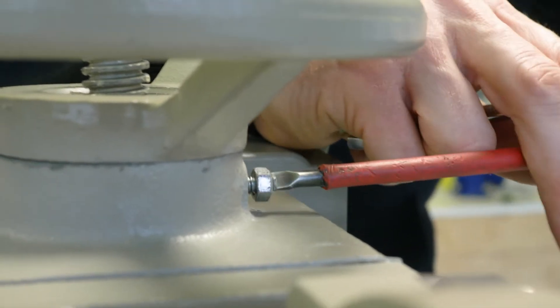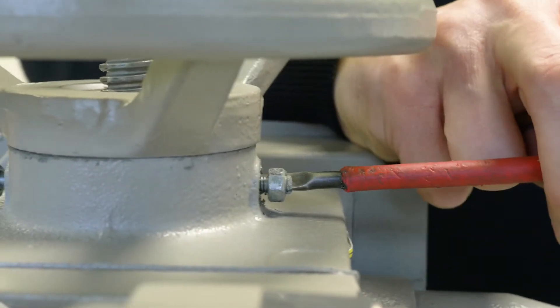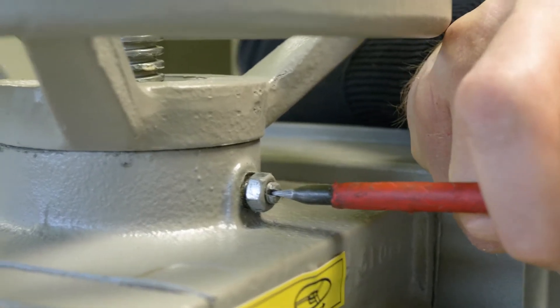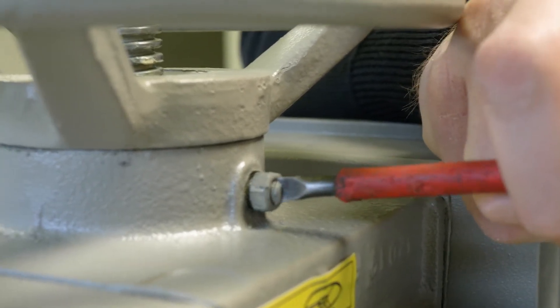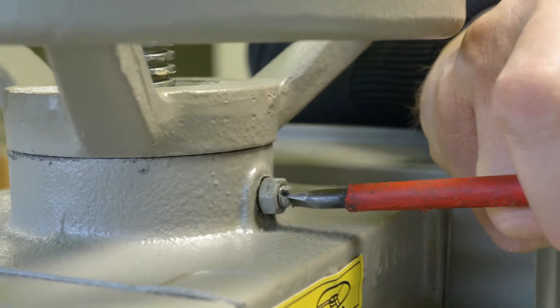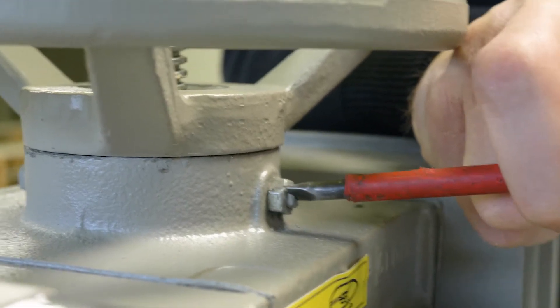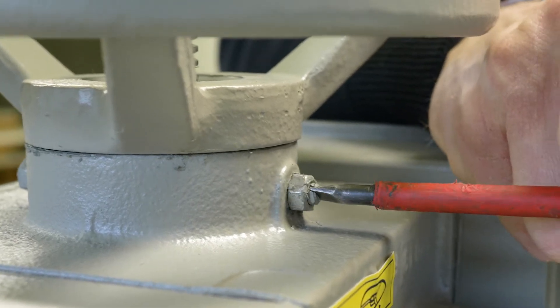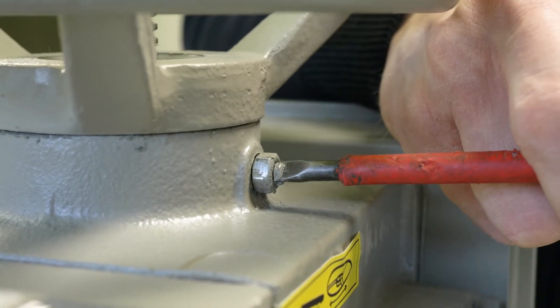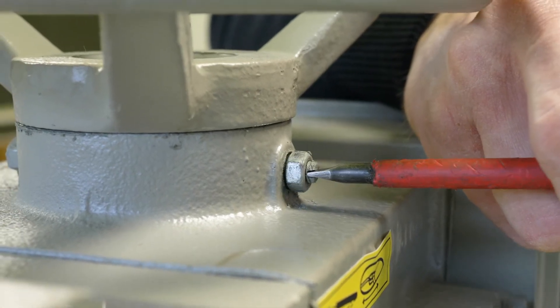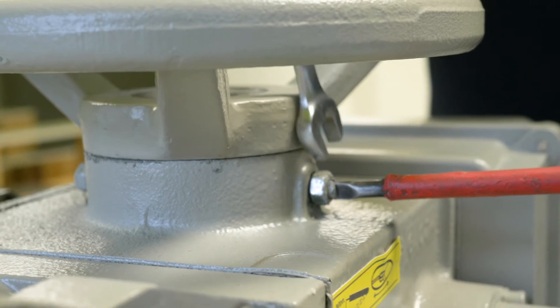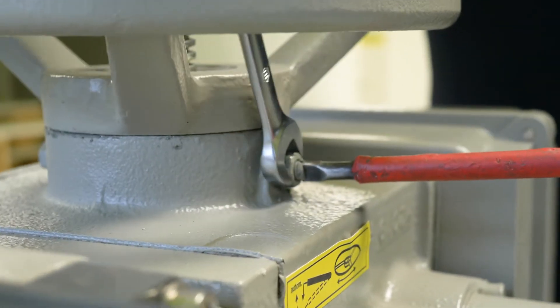Okay, we tighten the worm screw. Okay, now it is tight and then we turn back approximately two turns and tighten the nut.